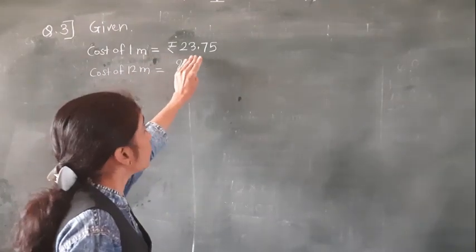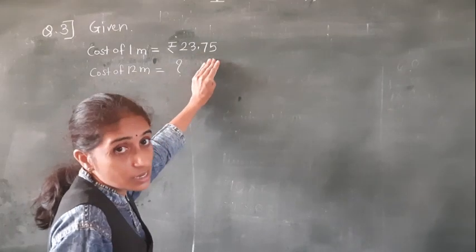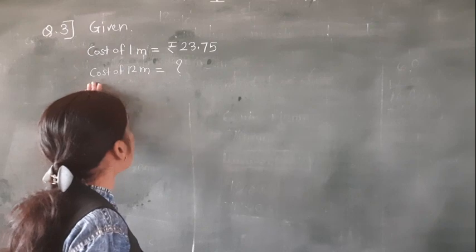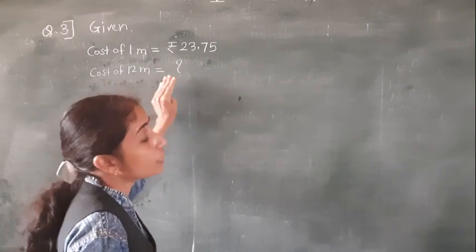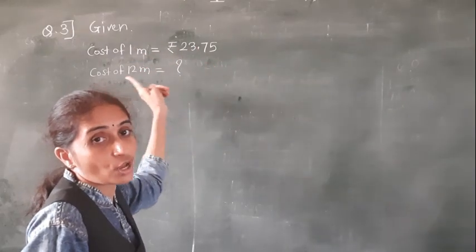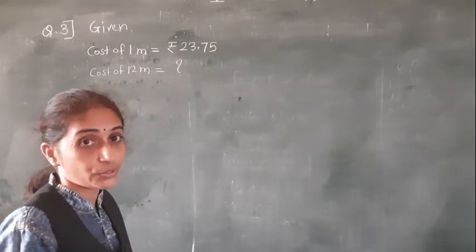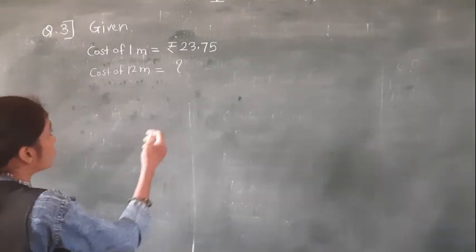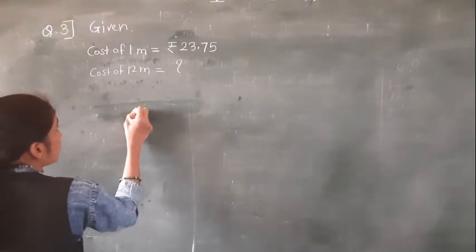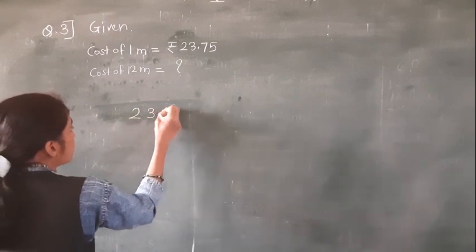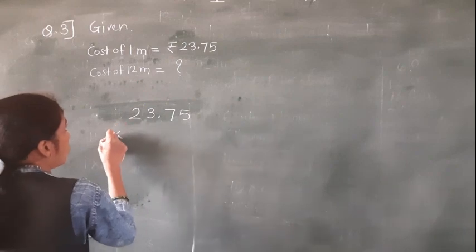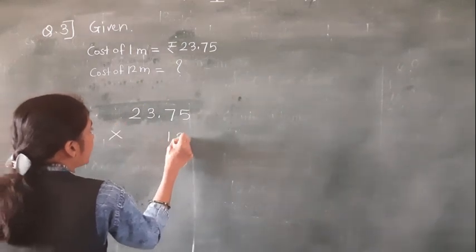What is asked to find? Cost of 12 meters of cloth. It is given for 1 meter and asking for many meters. So what we have to do — we need to multiply. Do this multiplication: 23.75 multiplied by 12.